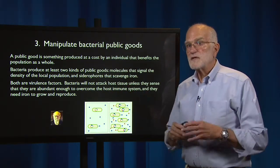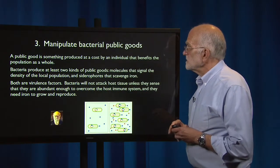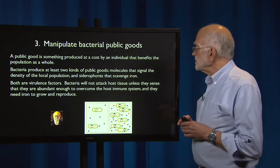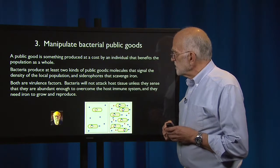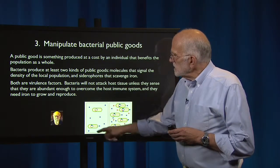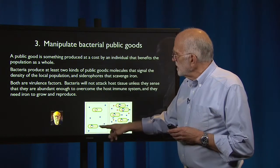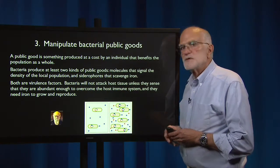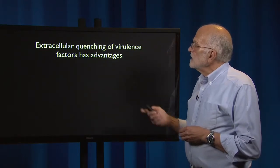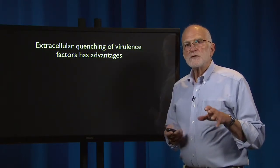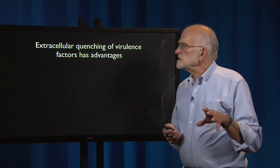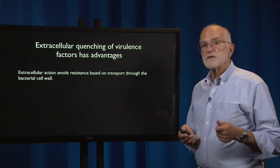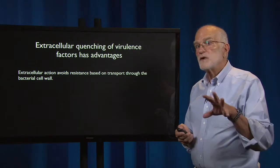Bacteria need iron for their metabolism. Both of these are virulence factors — bacteria will not attack host tissue unless they sense that they are abundant enough to overcome the host immune system, and they need the iron to grow and reproduce. What you can see here is a diagram in which bacteria are producing molecules where a molecule produced by one cell is also being used by another cell. If we can quench these virulence factors outside the cells, that has some advantages. Extracellular action avoids resistance based on transport through the bacterial cell wall, so we don't have to worry about coevolution of the cell wall.